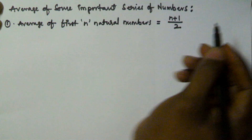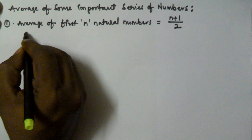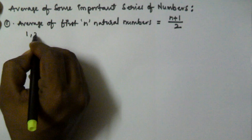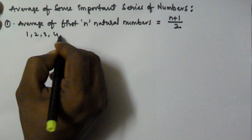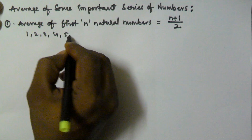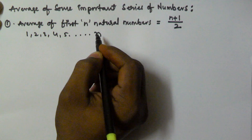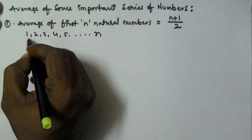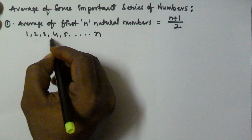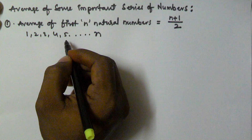How do we get this? Write the first n natural numbers: 1, 2, 3, 4, 5, and so on, up to n. If you observe this series, it is in arithmetic progression.